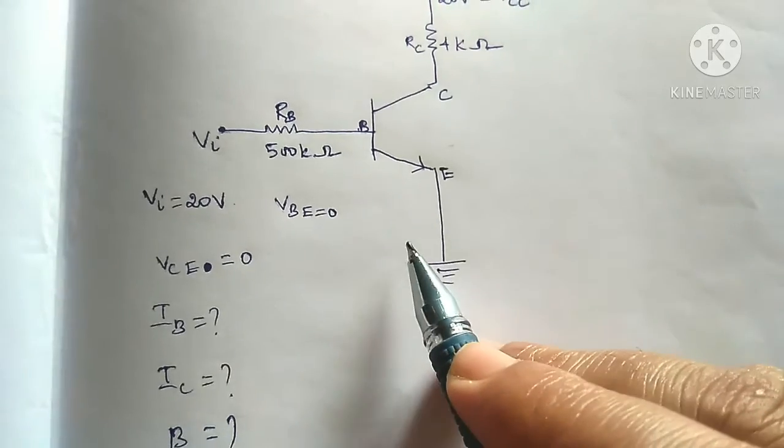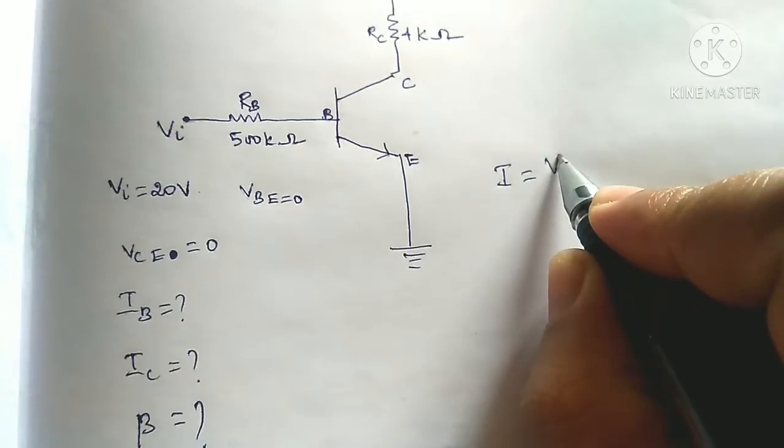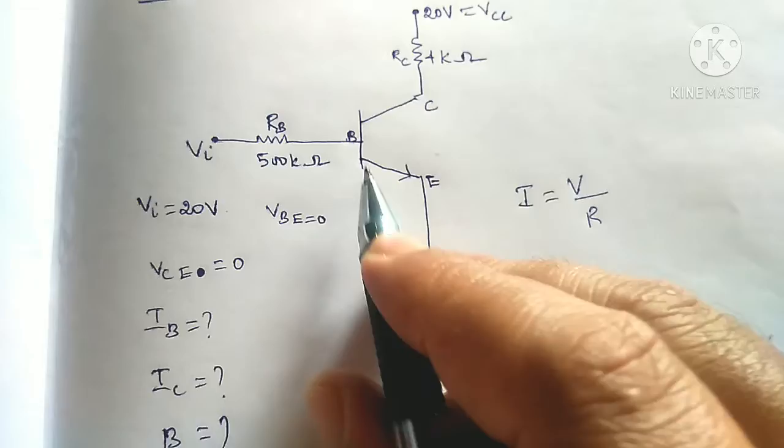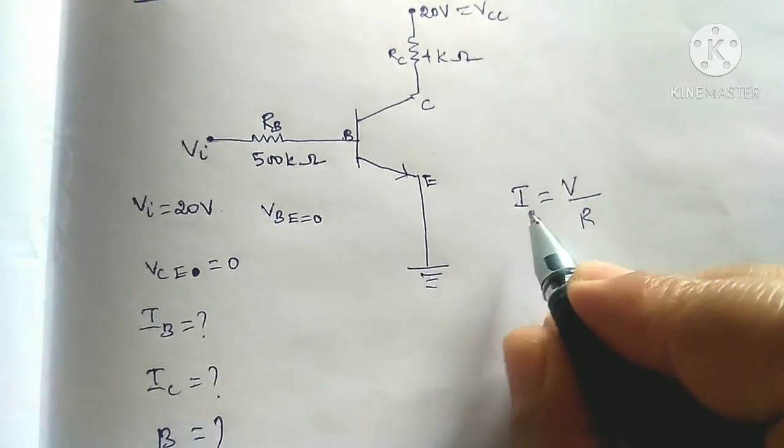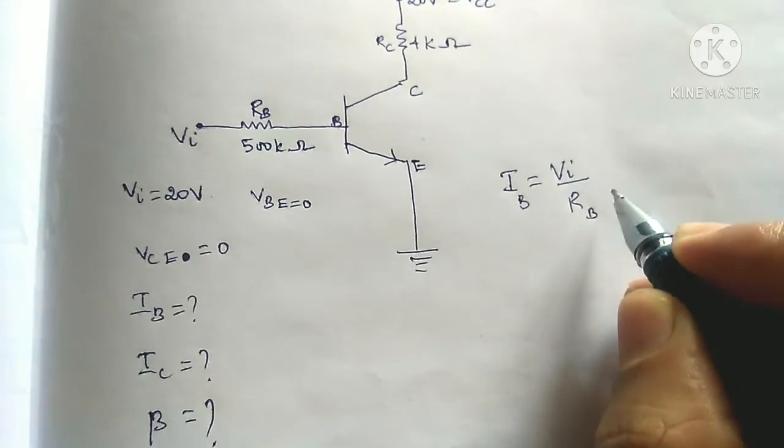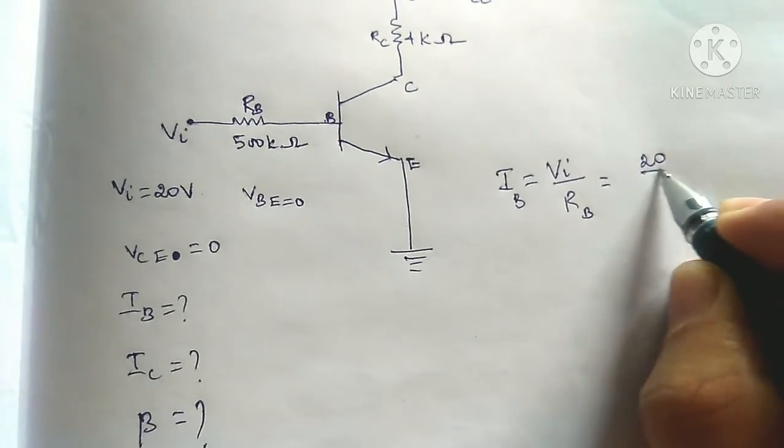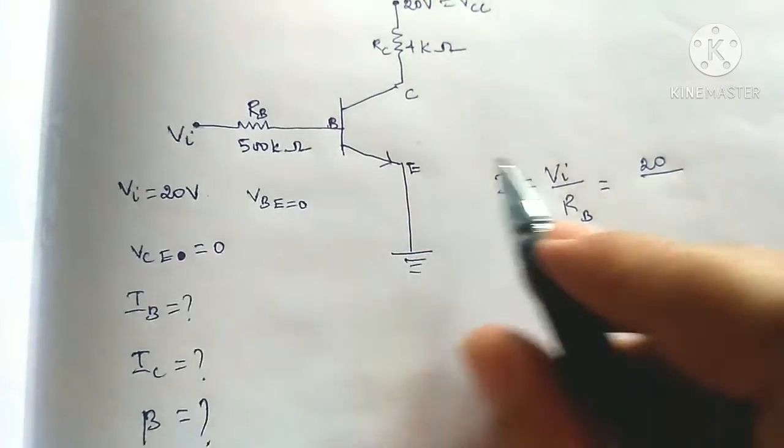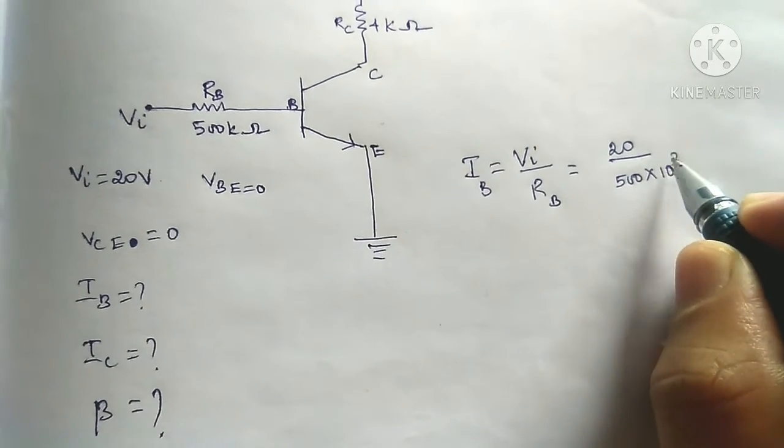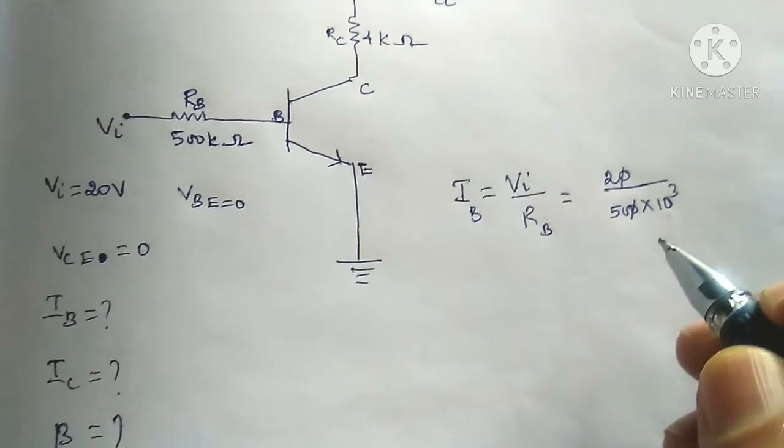So current equal to ohm's law, I equal to V by R. Right? IB is input current. Then input voltage by input resistance. Now input voltage is 20 volt and input resistance is 500 k. Then k is 10 power 3. When the 0 and the 0 cancel, right?